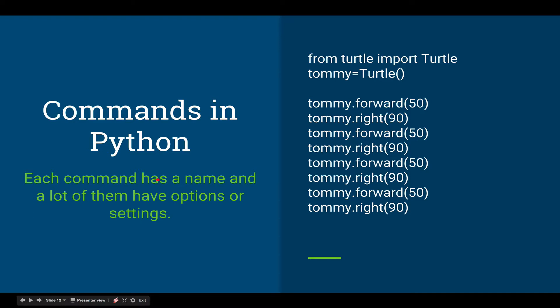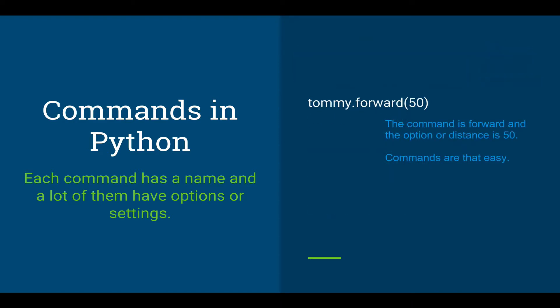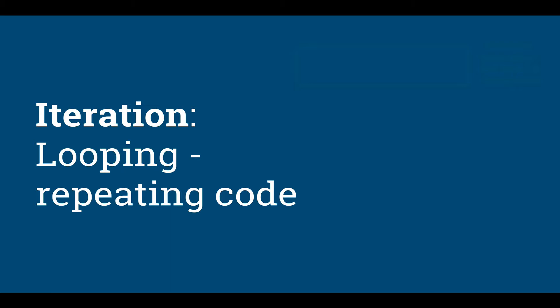And while we're talking about the commands — you've had some exposure to Python commands before. These first two commands you don't need to know how they work or why they work quite yet. You just need to put them at the top of every turtle program — that basically creates the turtle object. The command to move forward takes a distance, like 50 — put the number in the parentheses and that's it. It's that easy.